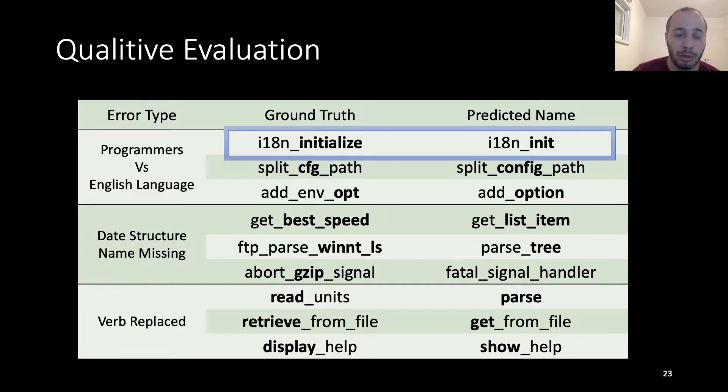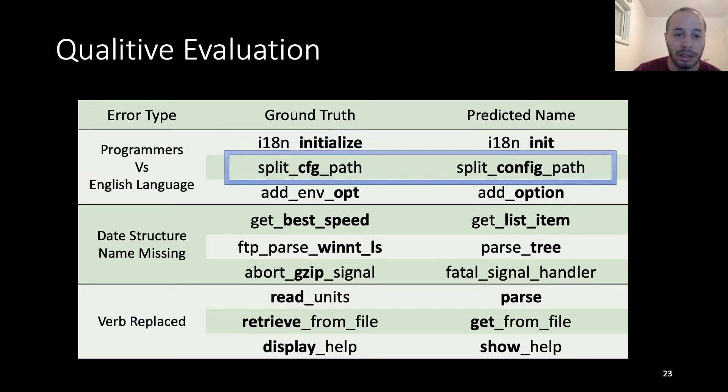A more complex example here is where the programmer used config, which is a shorthand for config, which is itself a shorthand for configure, and this is why the module chose that instead of these unknown, not very apparent in the module, in the training set, a shorthand of a shorthand.